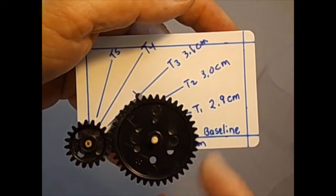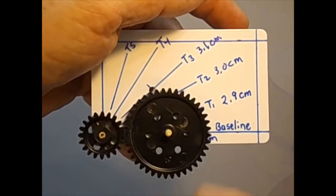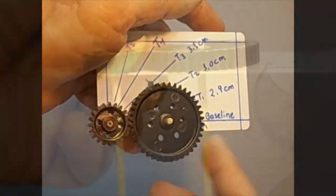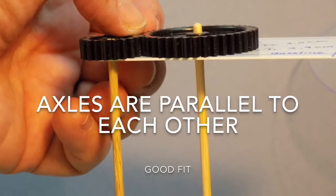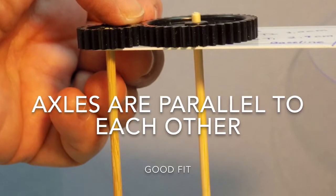Check your work by replacing the large gear on the length of axle and inserting it into the newly punched hole. Check the fit. Do the gears turn smoothly and easily in either direction? Are the axles parallel to each other? If you can answer yes to these questions, it's an indication of a good fit. Sometimes you get lucky and get it right the first time.